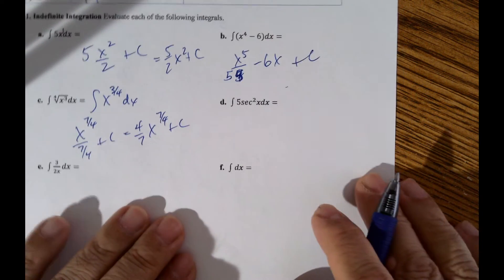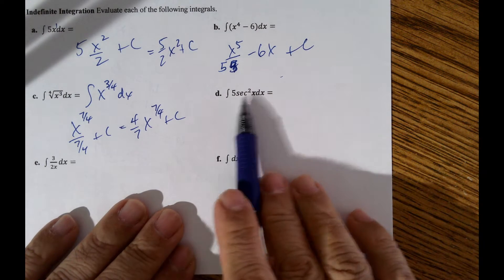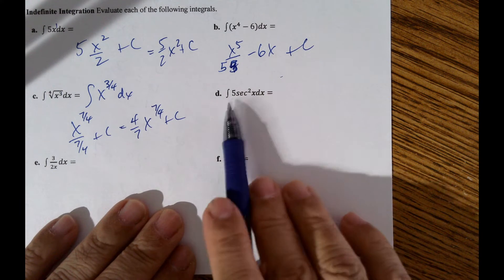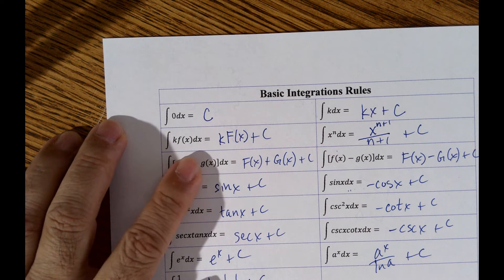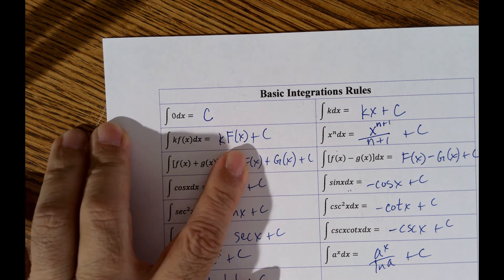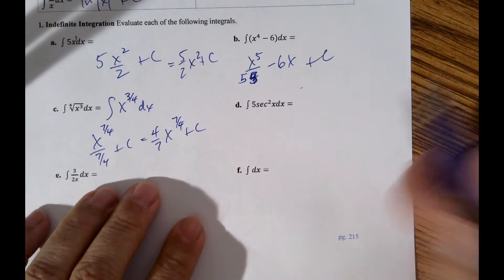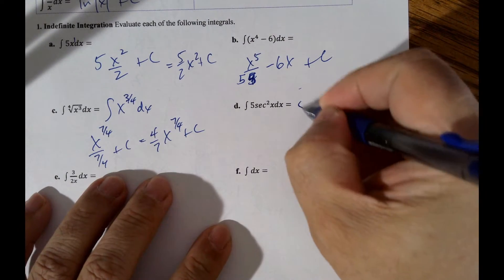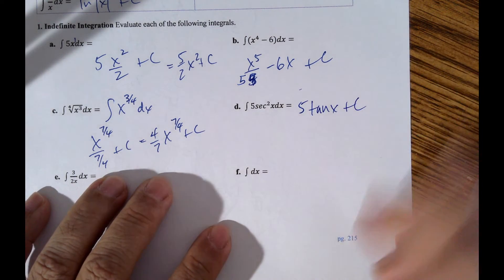Secant squared is the derivative of tangent. So here, 5 is the constant k and secant squared is f of x. Capital F of x will be tangent, and the 5 just comes along for the ride. So the answer is 5 times tangent of x plus the constant.